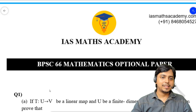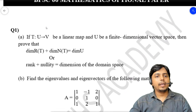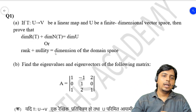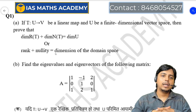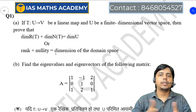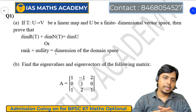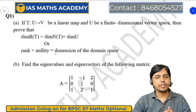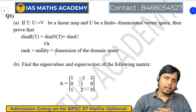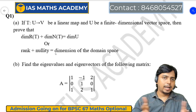Question number 1A में: if T is a transformation from U to V, a linear mapping, and U be a finite dimensional vector space, then prove that dimension of range space plus dimension of nullity is equal to dimension of U. यह Rank-Nullity theorem है। यह question हमने last year BPSC 66 के test में भी डाला था, यह काफी known question है। Rank-Nullity theorem plus intersection-union वाला theorem ये दोनों theorem काफी important हैं और exam में आते रहते हैं, तो 1A को मैं काफी easy question बोलता हूँ।